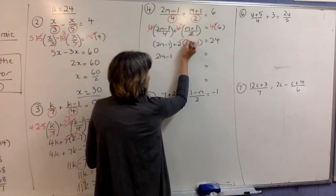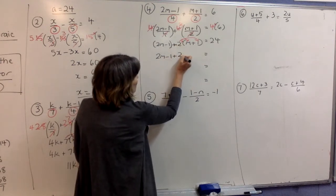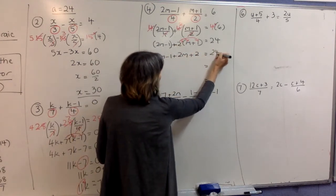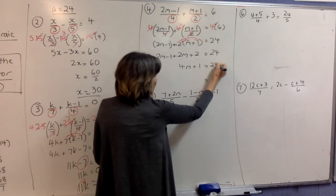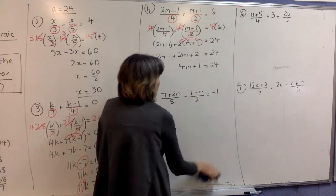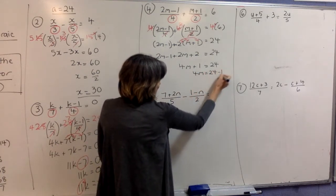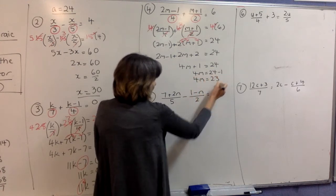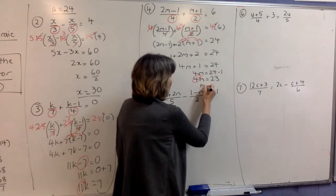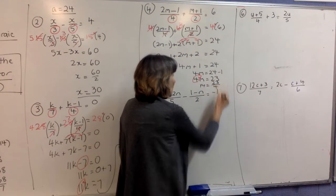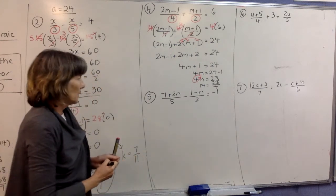The 2m minus 1 has nothing in front to multiply by, so just write it as 2m minus 1. This one does have expanding to do, giving plus 2m plus 2. Collecting like terms: 2m plus 2m is 4m, plus 1 equals 24. Getting rid of the 1 and then dividing by 4 — if you put that in your calculator it gives you 23 over 4, so that's your answer.